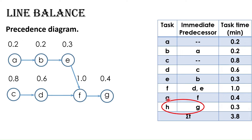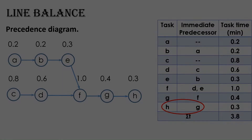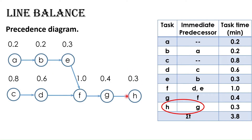The last task is task H with an immediate predecessor, task G. So, draw an arrow starting from G and pointing to the right. Then draw a node with the letter H inside and its duration 0.3 above. Now we finished the precedence diagram, which visually represents the tasks to be completed in the production line and the sequential requirements, indicating the order in which the tasks must be performed.